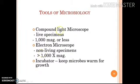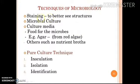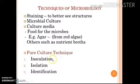A compound light microscope is used to observe live specimens of microbes — bacteria, algae, fungi, and protozoa. An electron microscope is used to observe viruses and non-living specimens. An incubator is used to keep microbes warm for growth, operated at 37°C for bacteria and 25°C for fungi. Techniques include staining to better see the structure of microorganisms, microbial culture produced in different culture media such as agar and nutrient broth, and various pure culture techniques such as inoculation, isolation of pure culture, and identification of microbes.